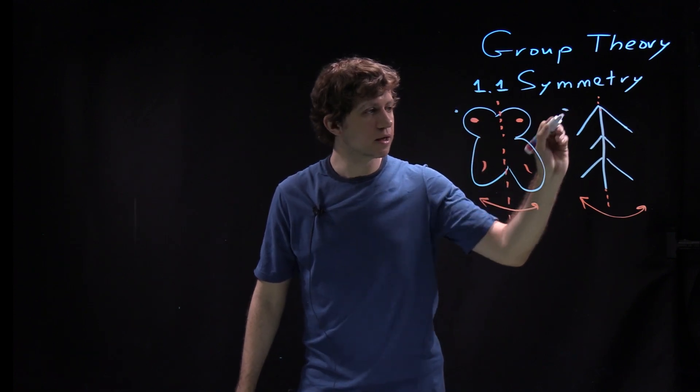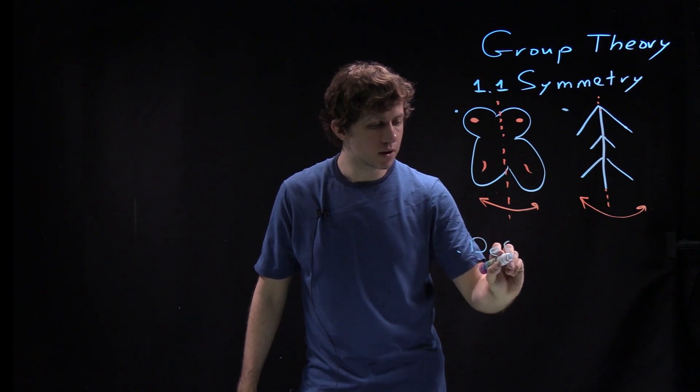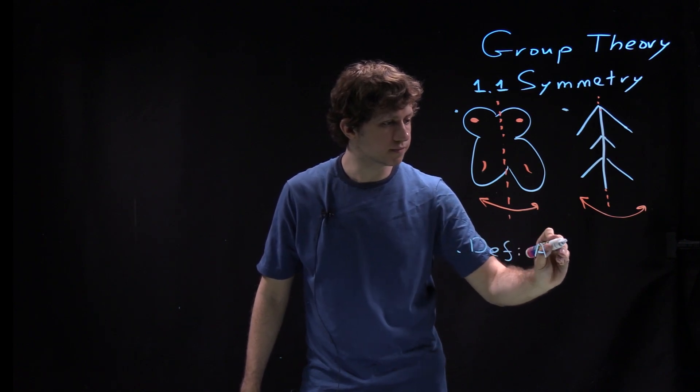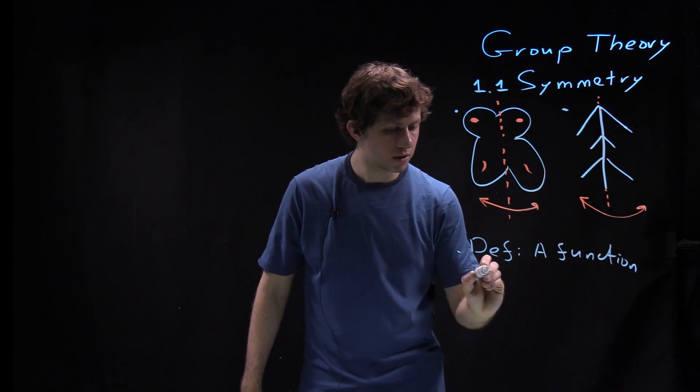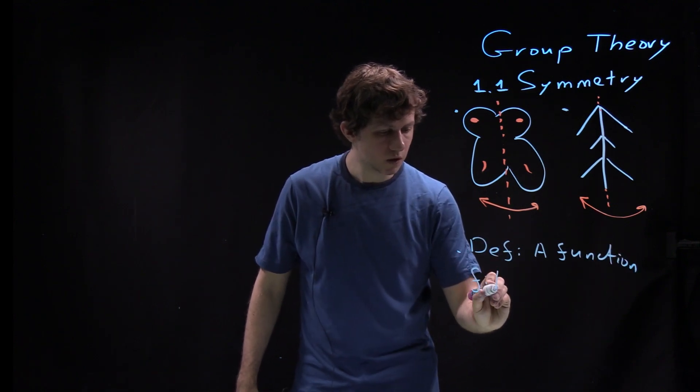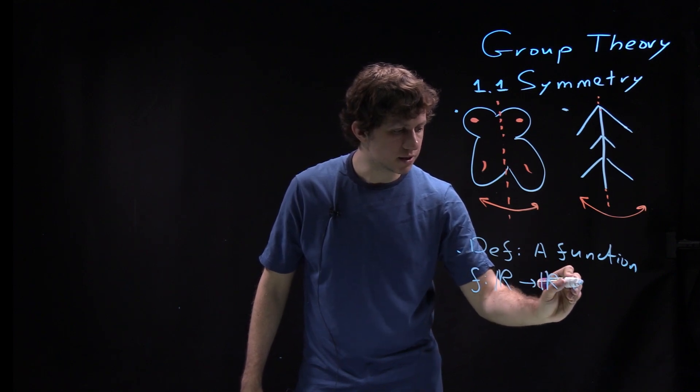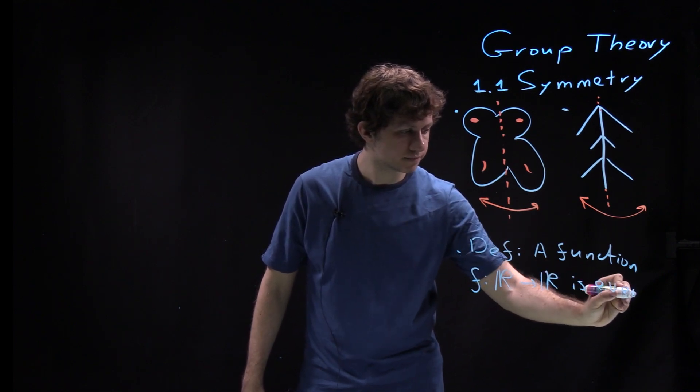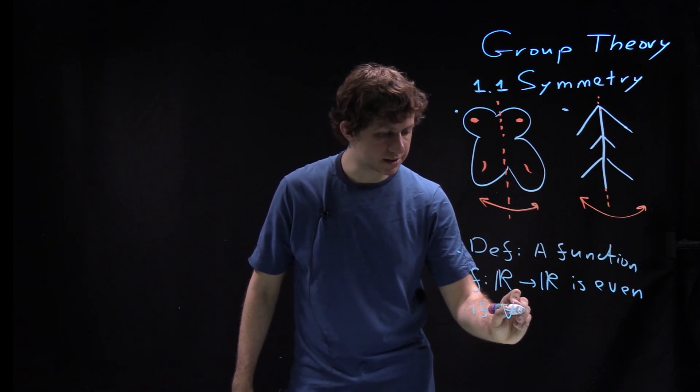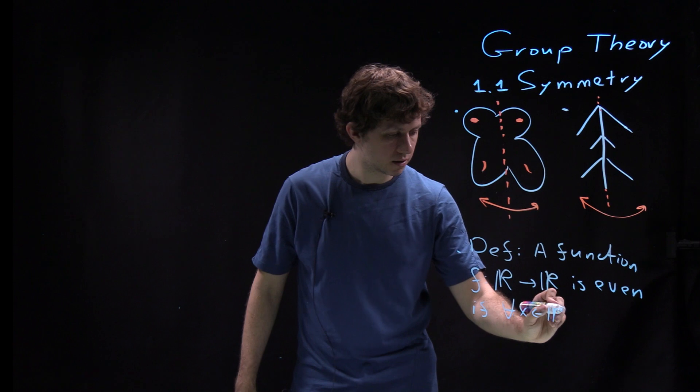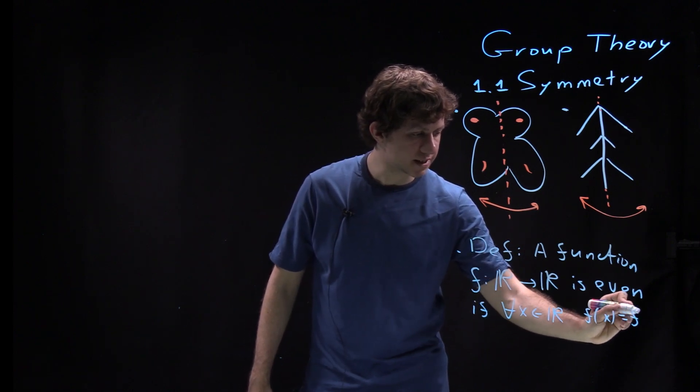This is kind of example number one, example number two. Example number three is just a definition: a function f from R to R is even if for every x in R, f(x) equals f(-x).